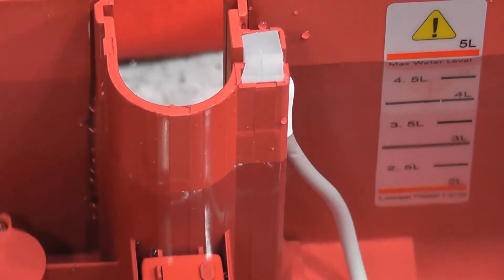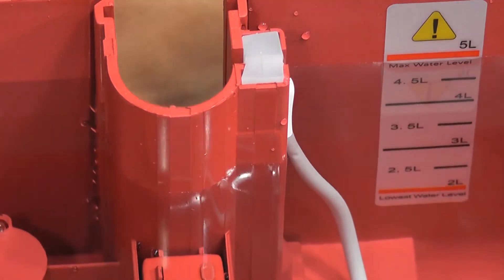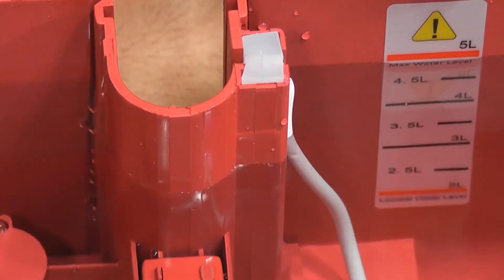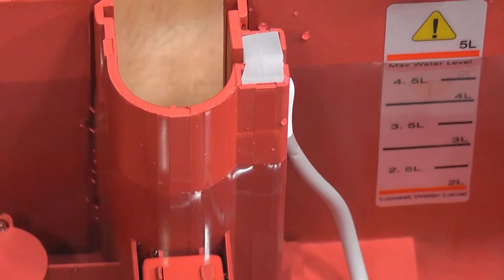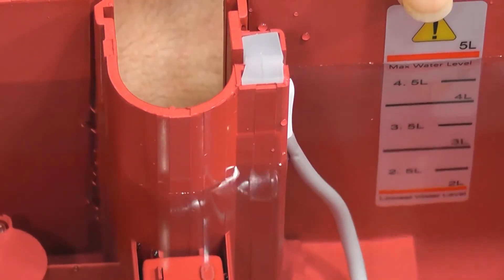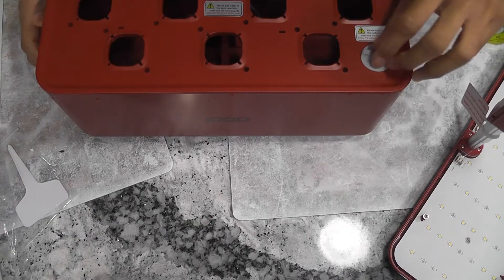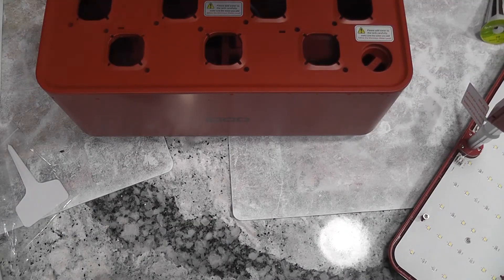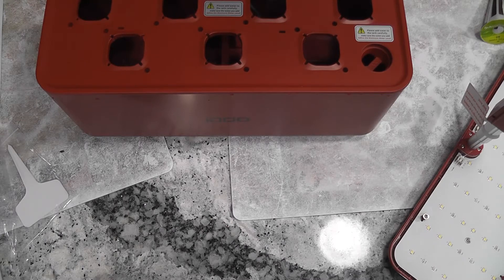You can see the water level indicator in the bowl. We can fill maximum 5 liters, which is indicated with solid orange line. This tray has an opening to fill water, which is pretty convenient.